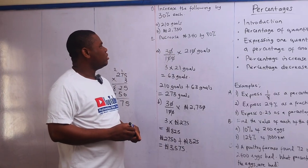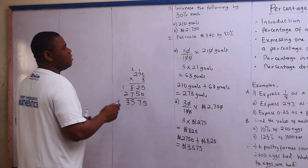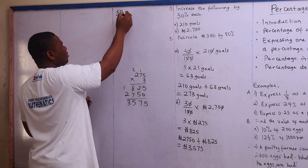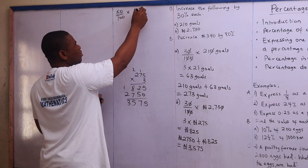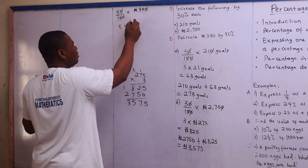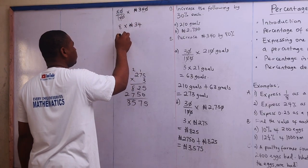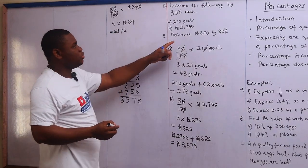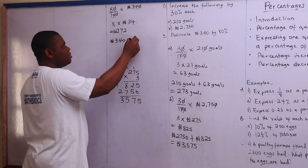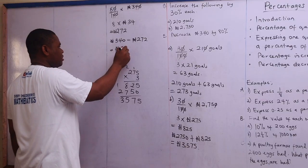The last one says decrease 340 naira by 80 percent. So I'll find 80 percent of 340 naira: 80 over 100 times 340 — zeros cancel, leaving 8 times 34, which gives 272 naira. Since the question says decrease, I subtract: 340 minus 272 gives 68 naira.